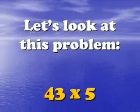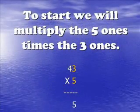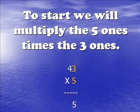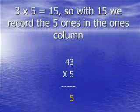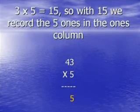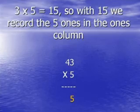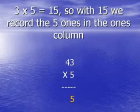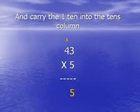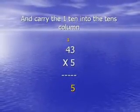Let's look at this problem. 43 times 5. Our first step is to multiply the five ones times the three ones. 5 times 3 is 15, so we record the five ones into the ones column. We then carry the one extra ten into the tens column.